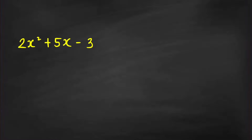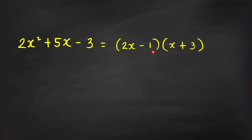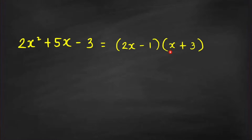Here you get 2x - 1 times x + 3. You need to determine the appropriate locations of 1 and 3 — the factors of 3 — and the corresponding signs. Since the last term is negative, one of them is negative. To check, you verify the sum of the outer and inner products equals your middle term: 2x times 3 is 6x, plus -1 times x is -x, and 6x - x equals 5x. So this is a correct factorization.